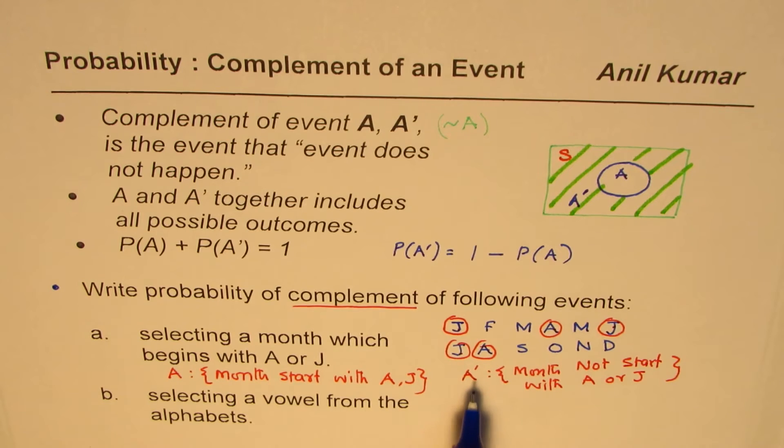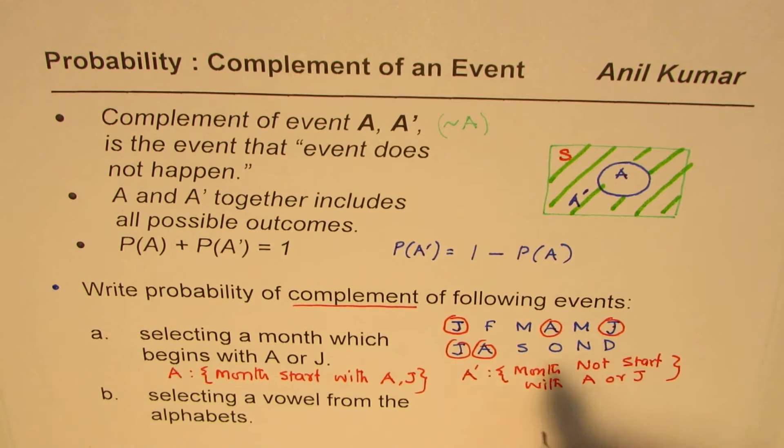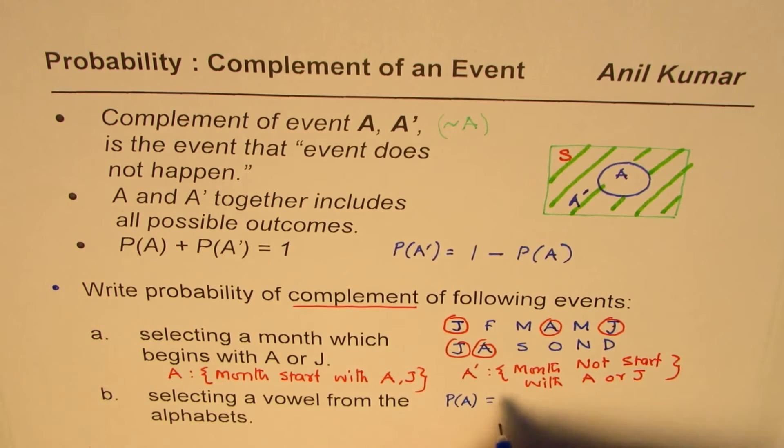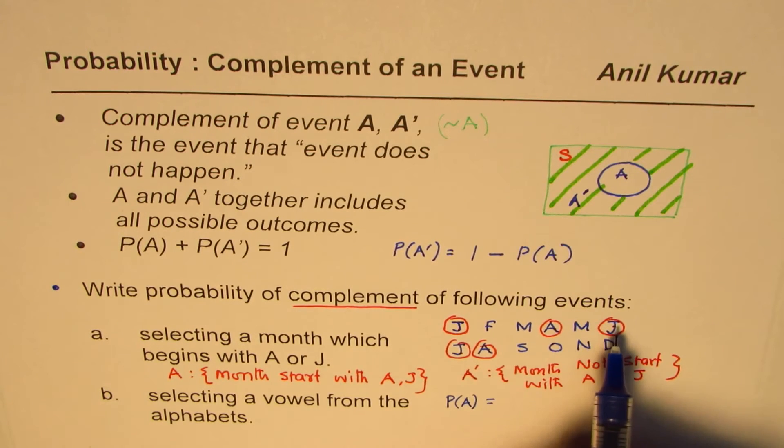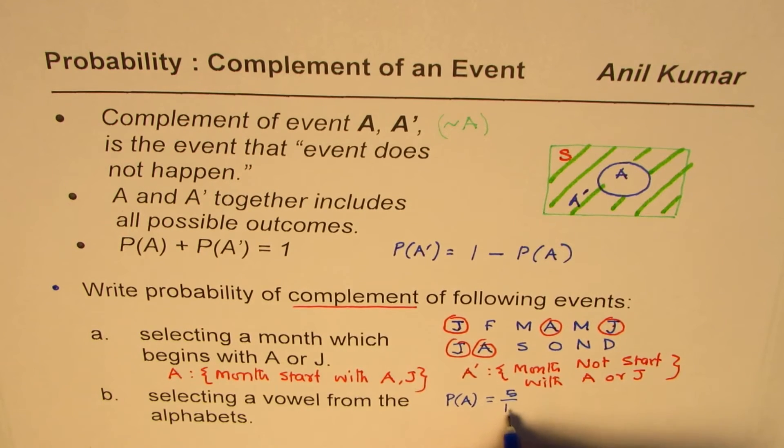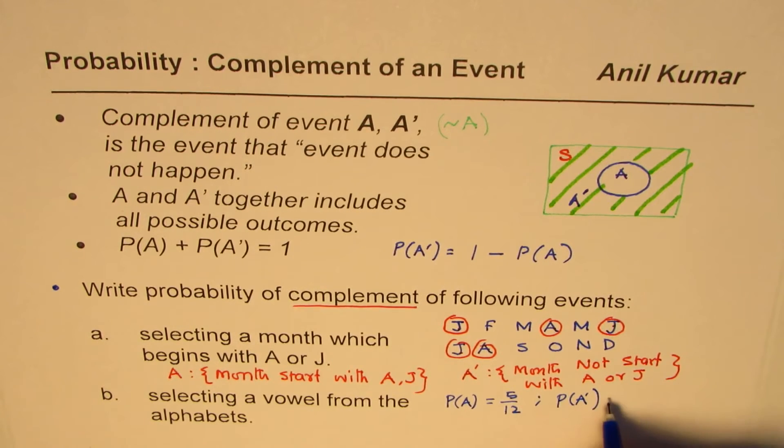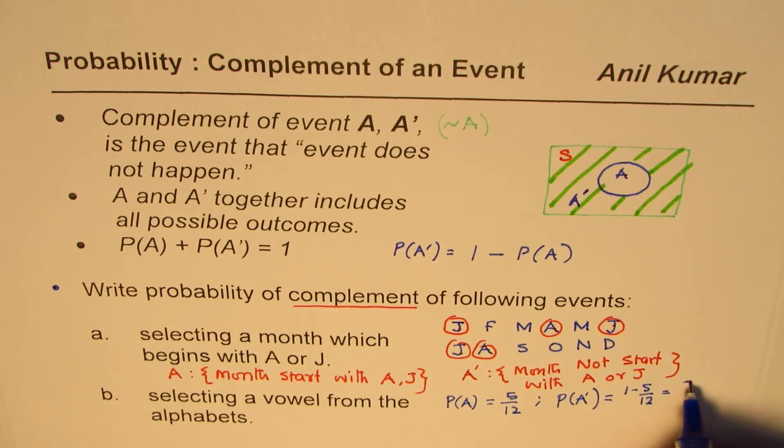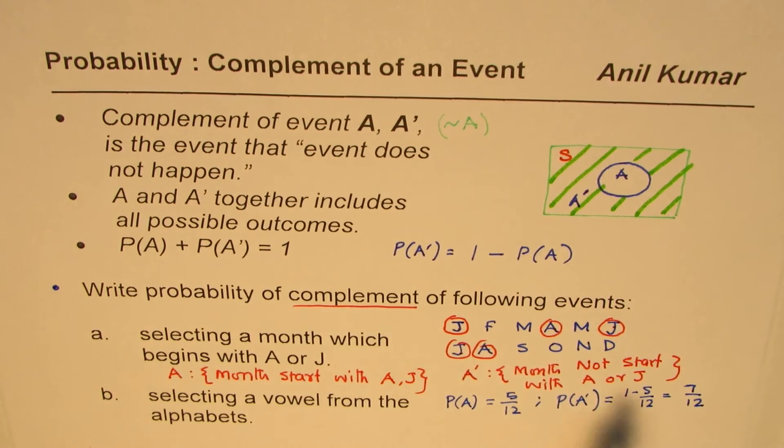So there are 12 months in all, so probability of A is equal to one, two, three, four, five, it is five out of twelve. So probability of A, complement of A, will be equal to one minus five out of 12. Or you could think what makes this as a whole seven. Seven plus five is 12, 12 minus 5 is 7. Seven out of 12. So that is how you could actually answer this question.